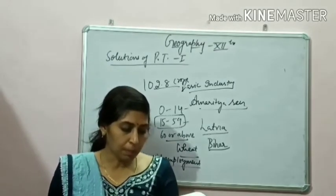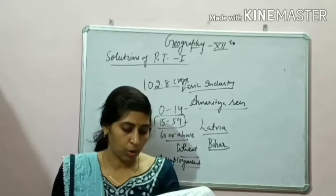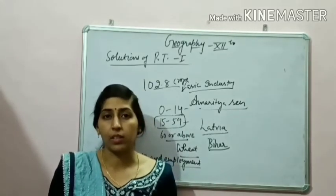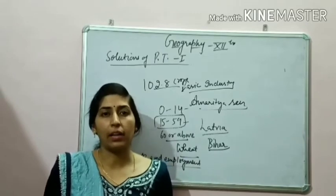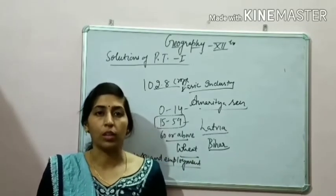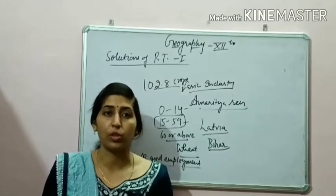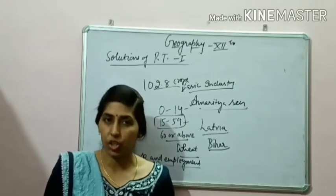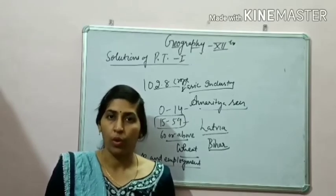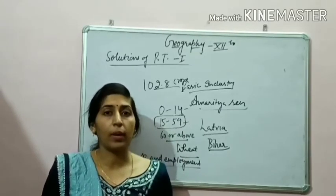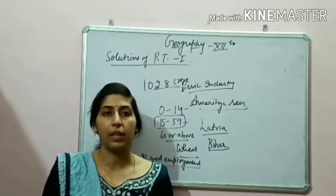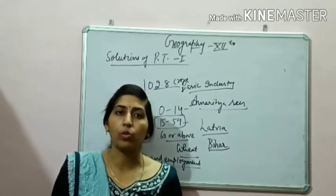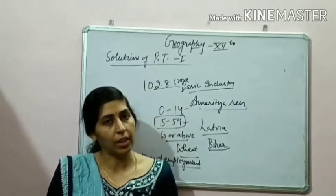The next question is: Punjab, Haryana, and Tamil Nadu use the highest groundwater — what are the reasons? Punjab and Haryana use groundwater for irrigation purposes. In Tamil Nadu, rainfall is quite low, so groundwater is used heavily there as well, mainly for irrigation purposes.